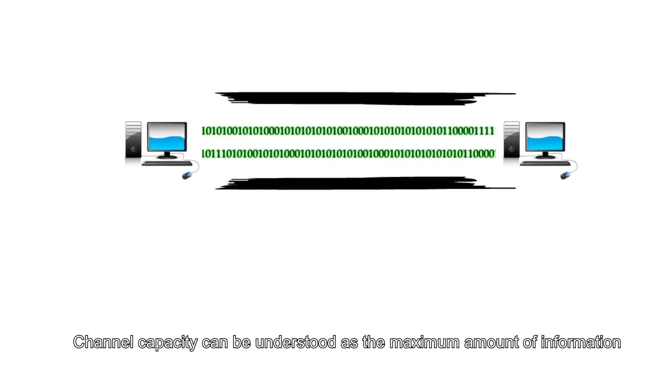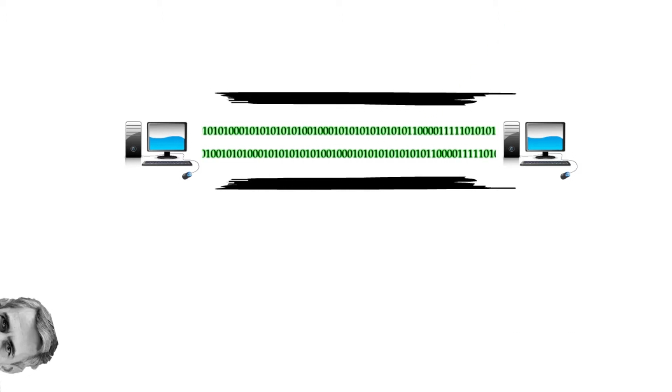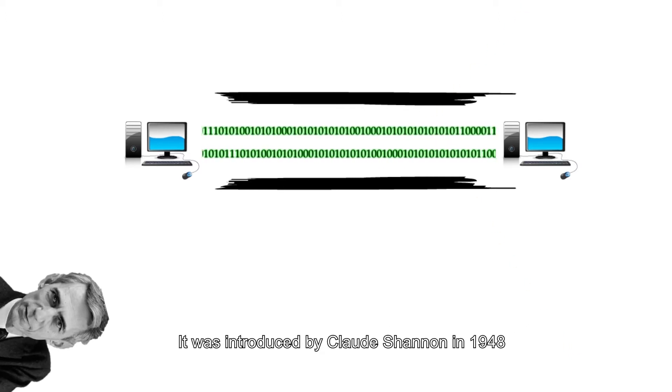Channel capacity can be understood as the maximum amount of information that can be transmitted and fully recovered in a specific channel. It was introduced by Claude Shannon in 1948.